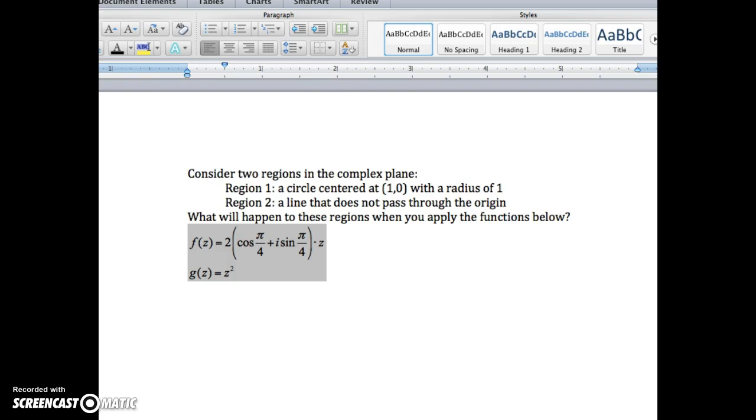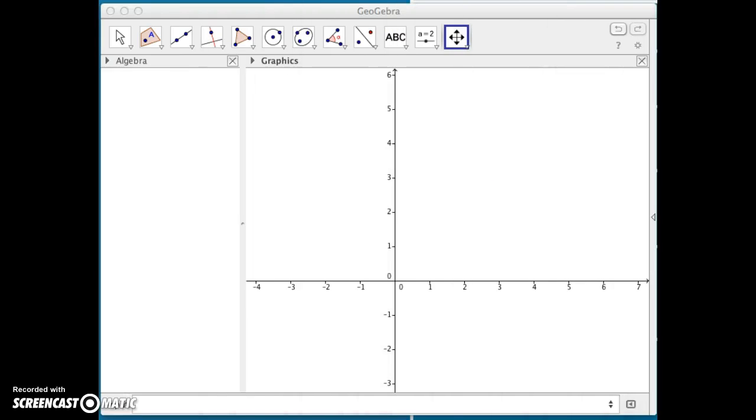The question is what will happen to these regions when we apply these functions, and there are two functions. One is a rotation by pi over 4 with a scale factor of 2, a dilation of 2, and the other is squaring the complex number. I'd like to use GeoGebra to investigate these questions.